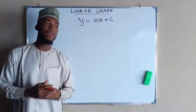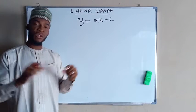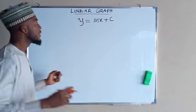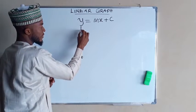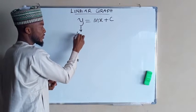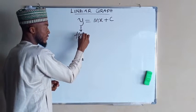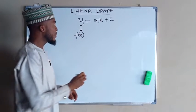Linear graphs are, in other words, a straight line graph. This y here stands for a function of x, which is a dependent variable.